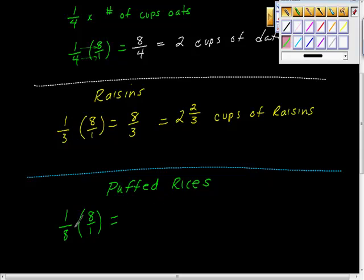And, let's do this one. I like this one a lot. This one makes me feel smart. 1 times 8? 8. Eight. 8 times 1? 8. 8 divided by 8? 1. One whole cup of puffed rice. One cup. Oh, of puffed rice.